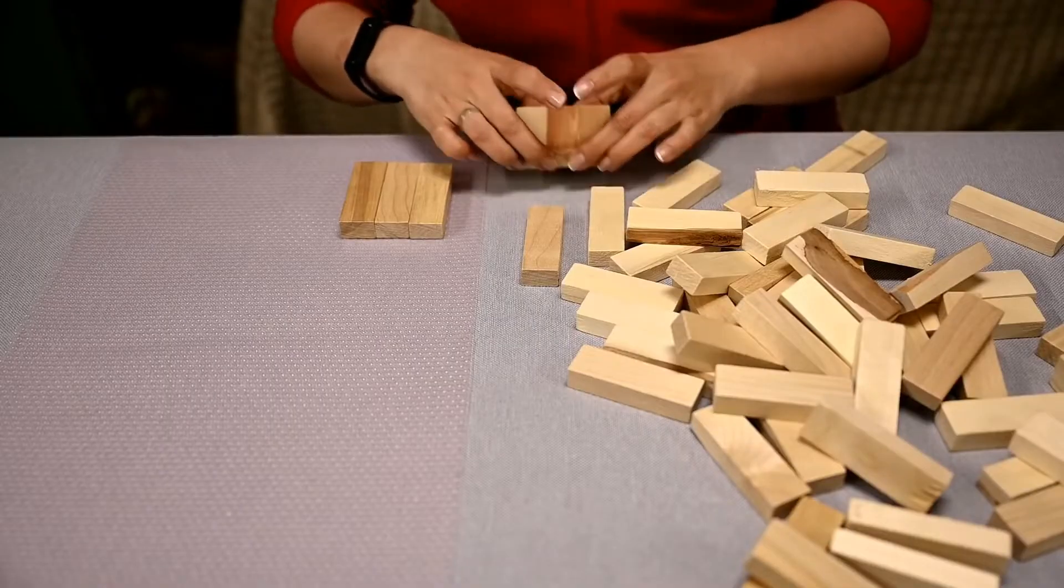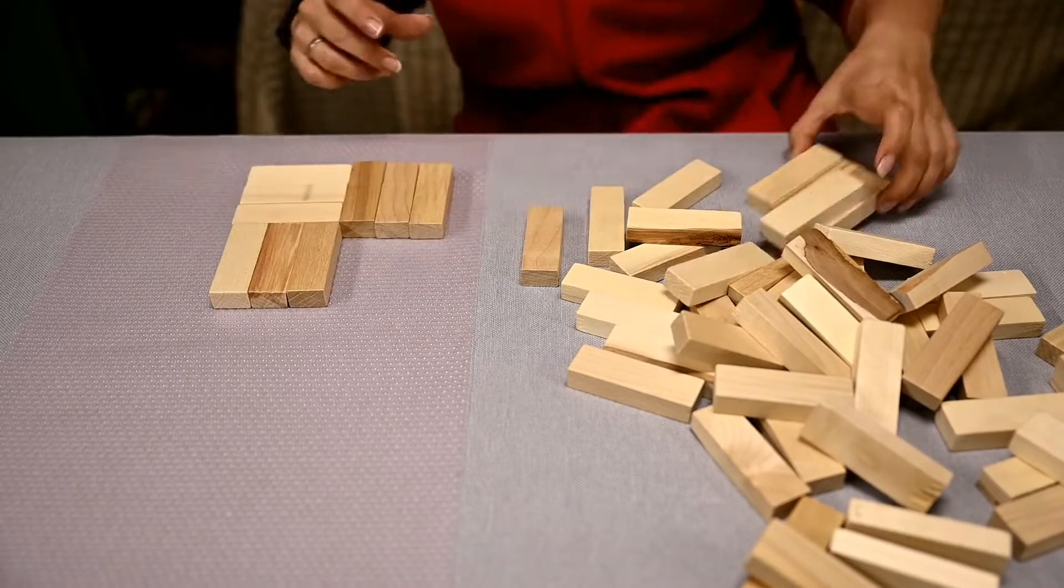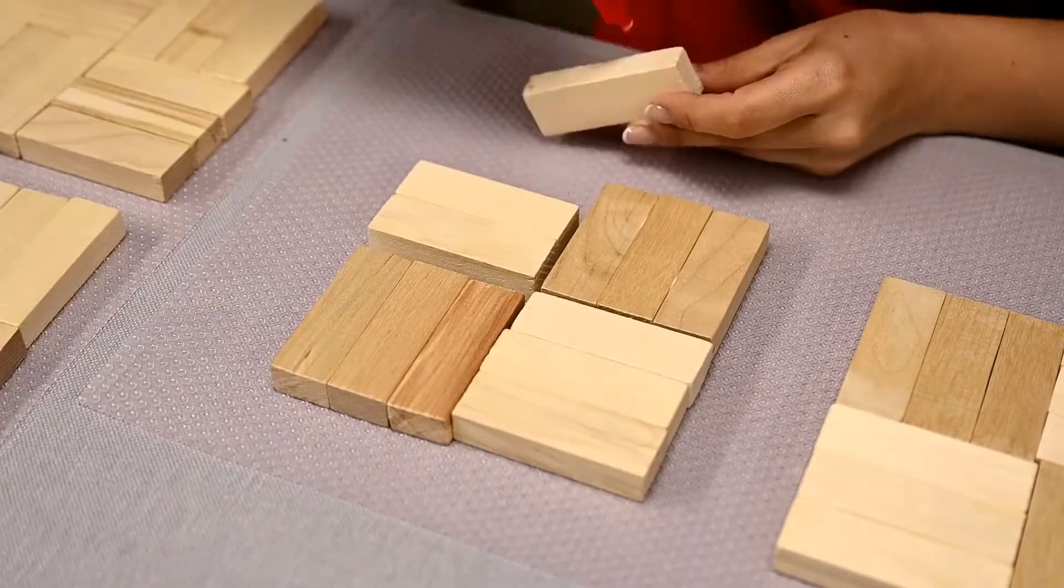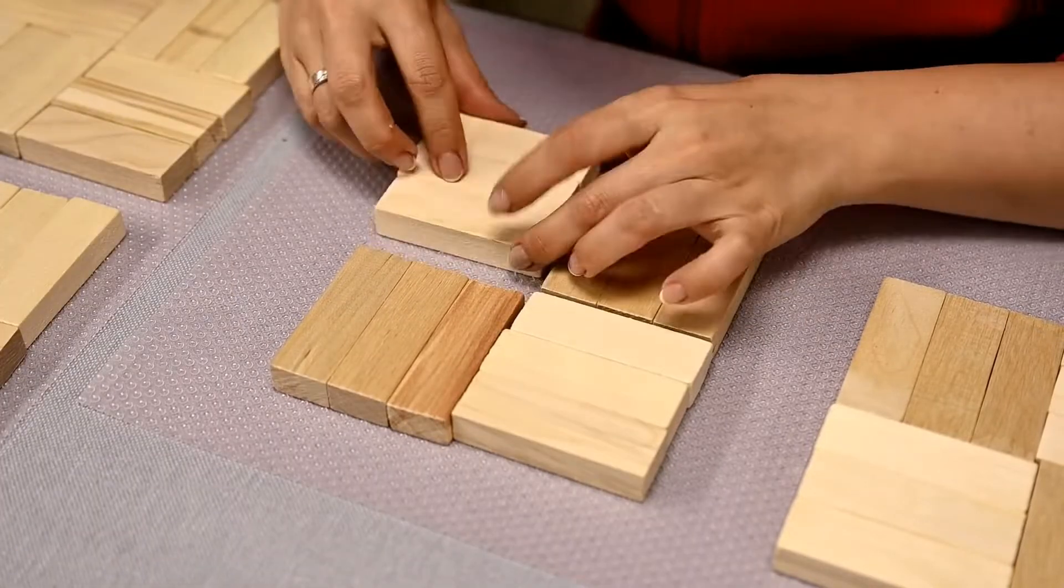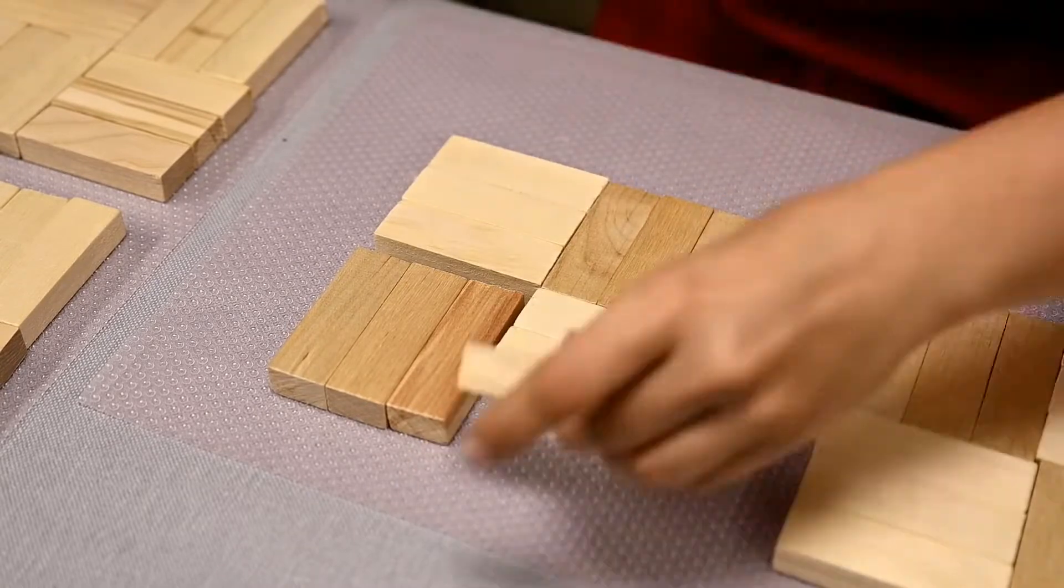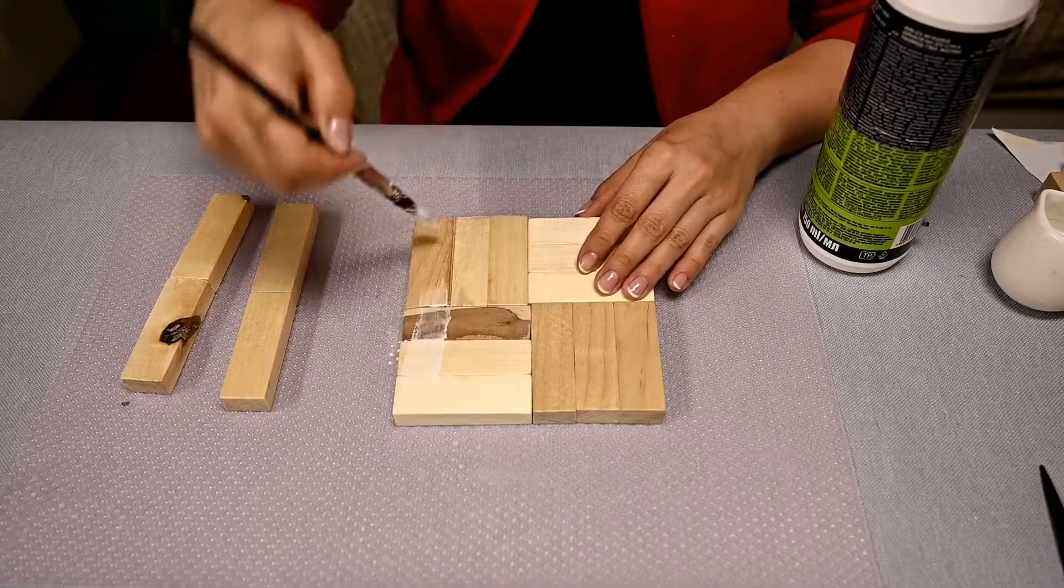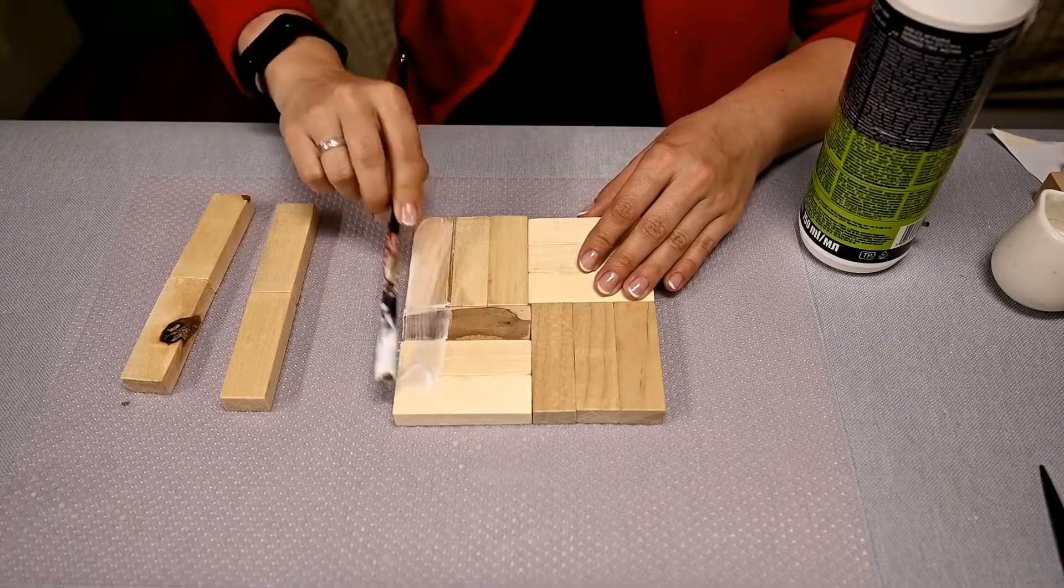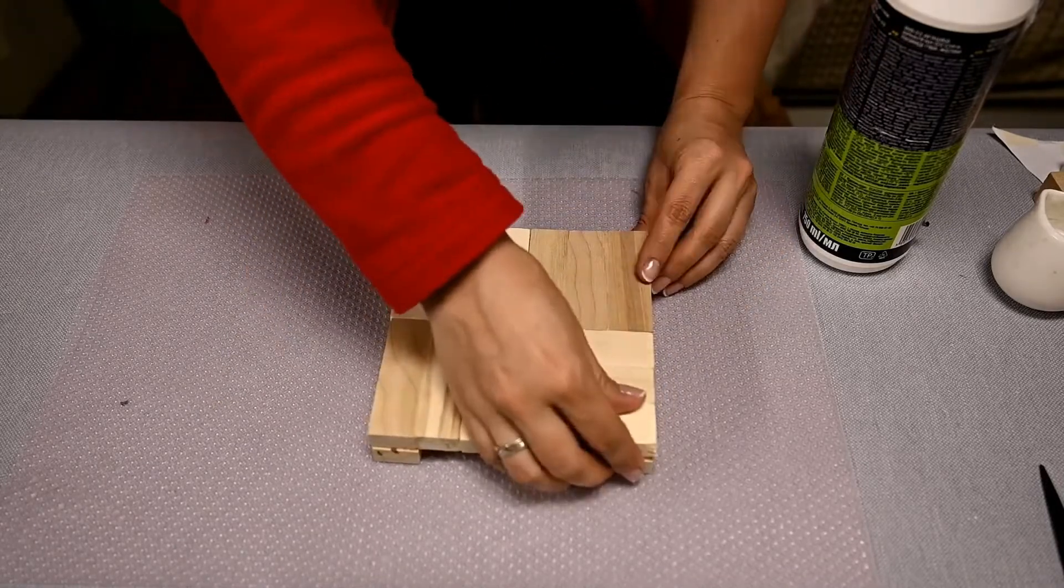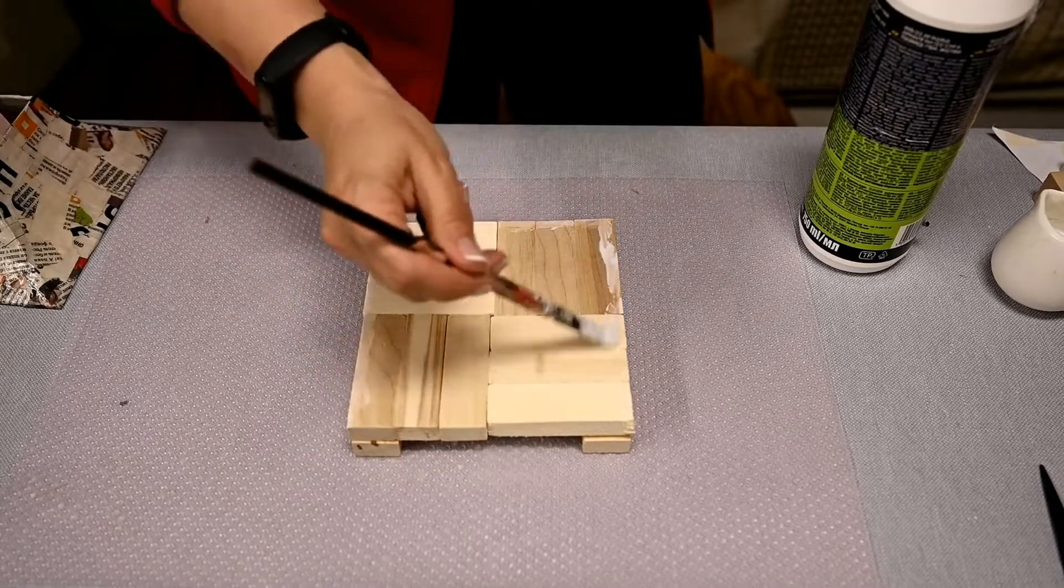While the sides are getting dry I'll make the bottom. I'm using 12 blocks for this and making a square pattern here like on a garden wooden flooring. I'm adding the legs to the finished bottom. These are two long bars. And finally I'm attaching the lantern sides to the bottom.